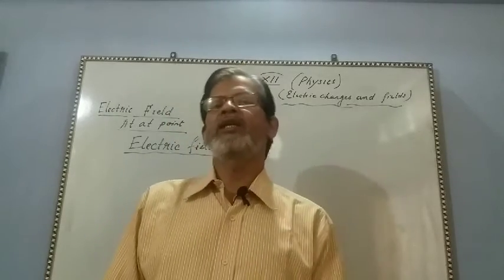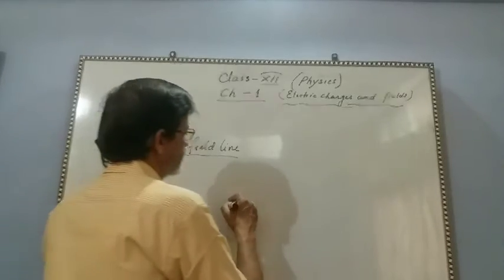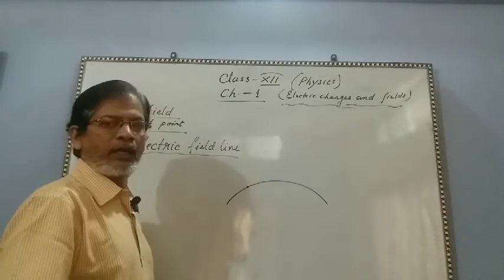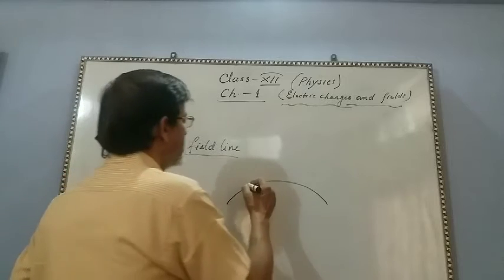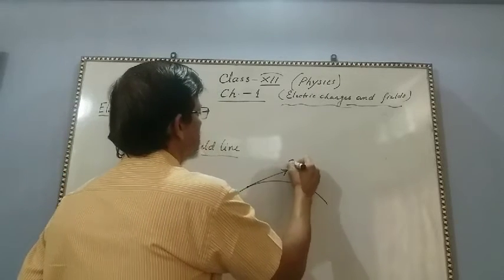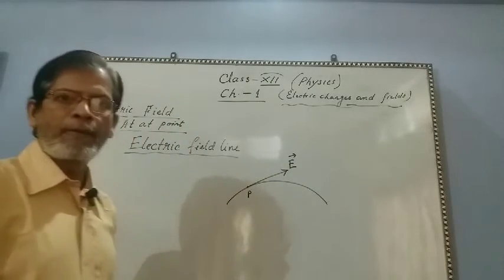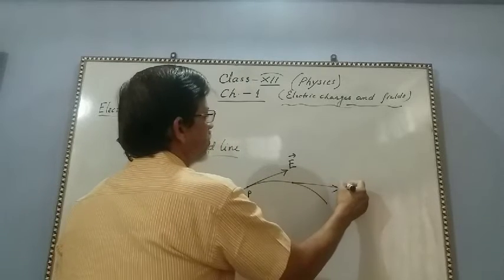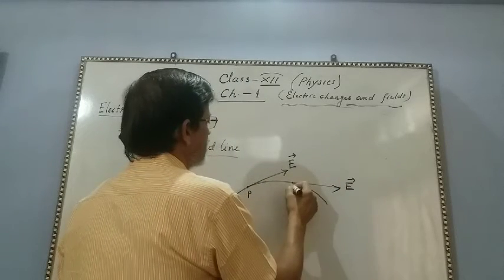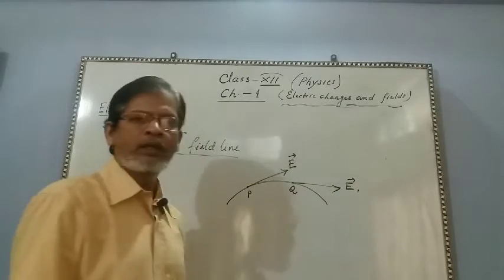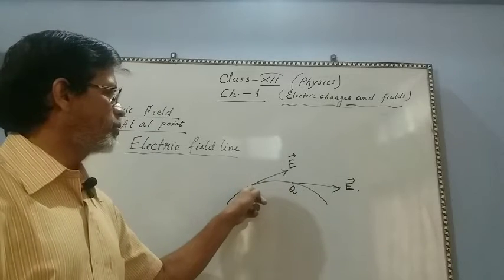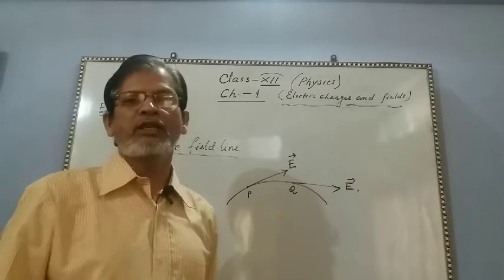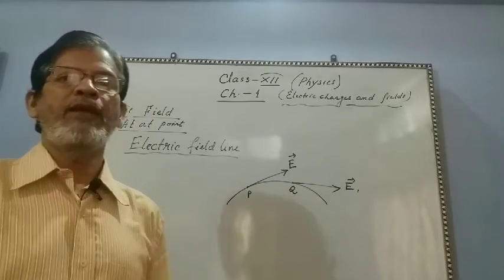The path may be a straight line or a curved line. If this is a curved line, then at any point — say point P — if we want to find the electric field, we have to draw a tangent at that point, and this tangent indicates the direction of the electric field. So at point Q, the electric field will be tangent to that point, and this tangent will be the direction of the electric field intensity.